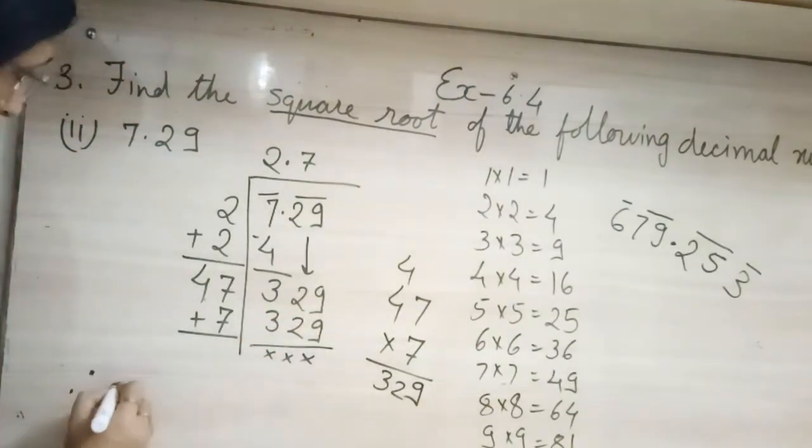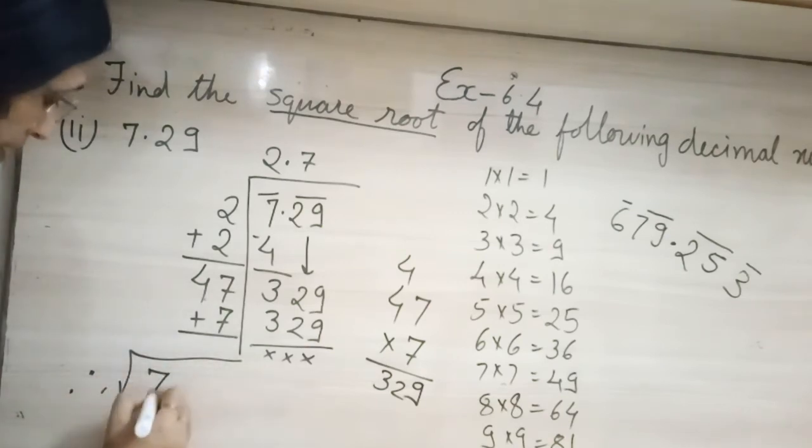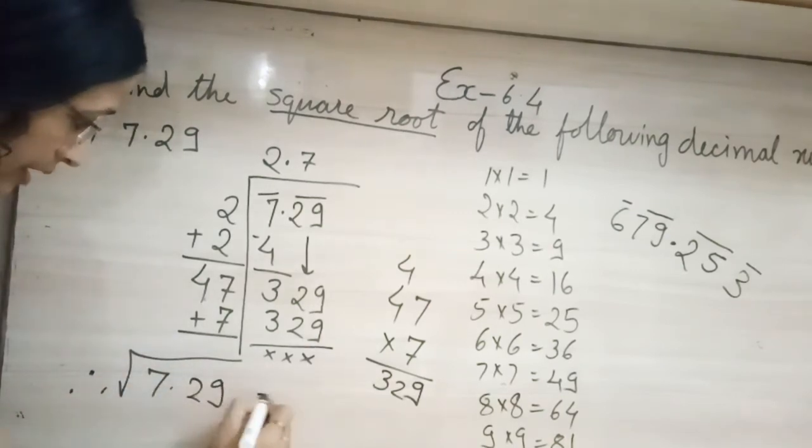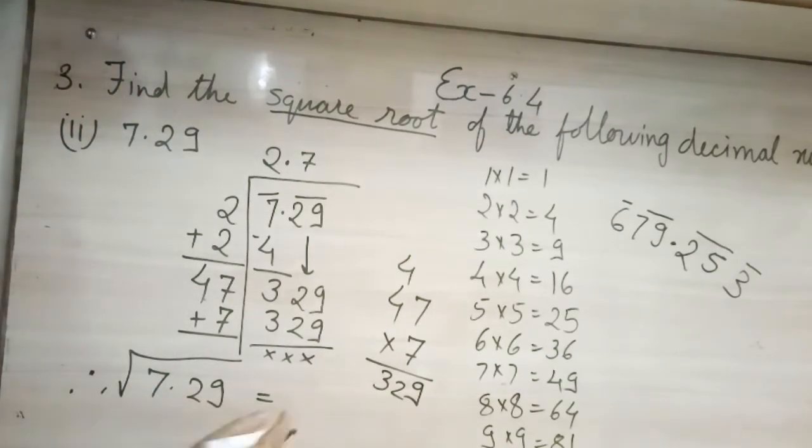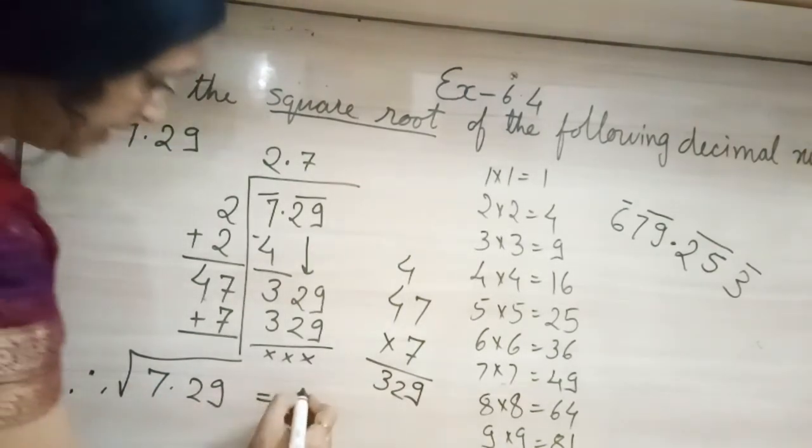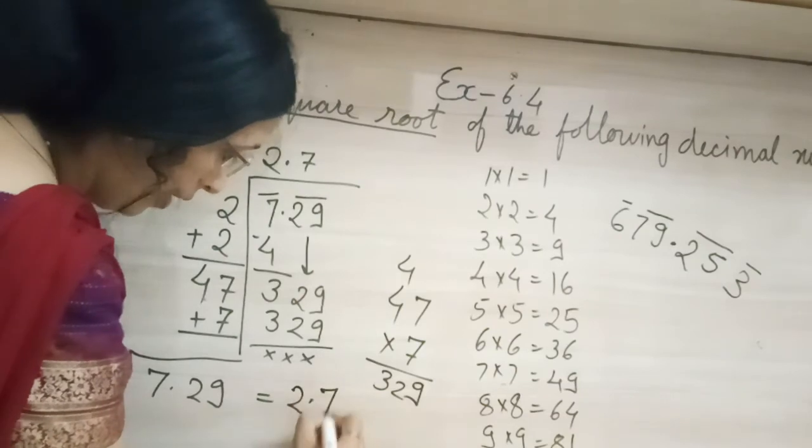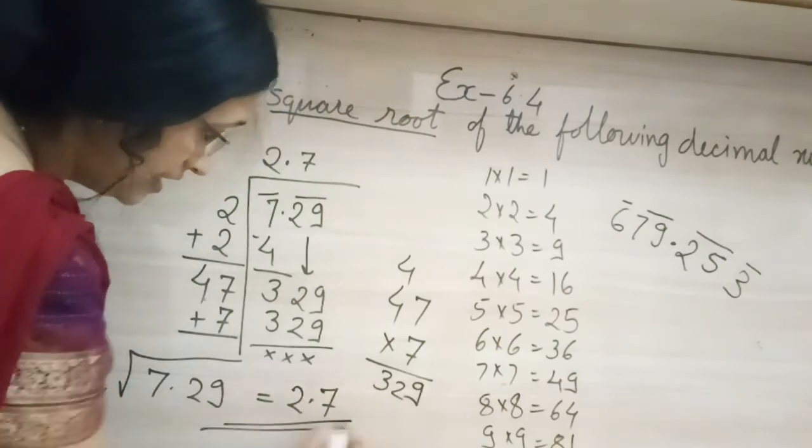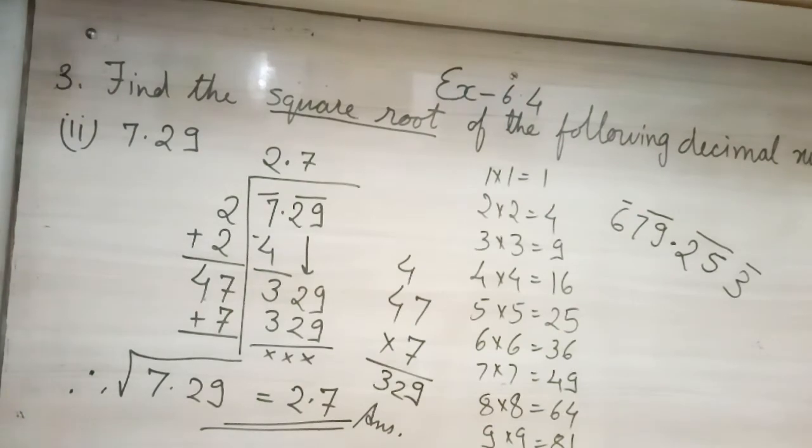So what are we going to write? Therefore, root 7.29 means square root of 7.29 is equals to 2.7. And this is our answer. Clear.